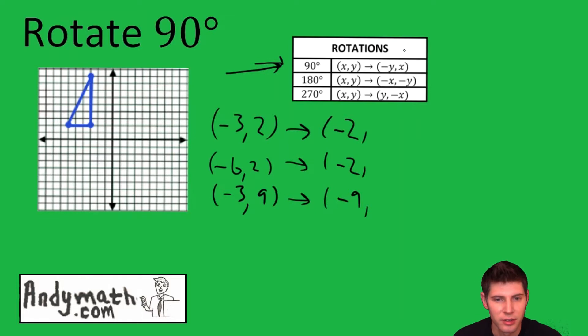And then the next thing it says here is x. That means that we're just going to copy the x value and put it in the y spot. So it's -3, -6, -3.